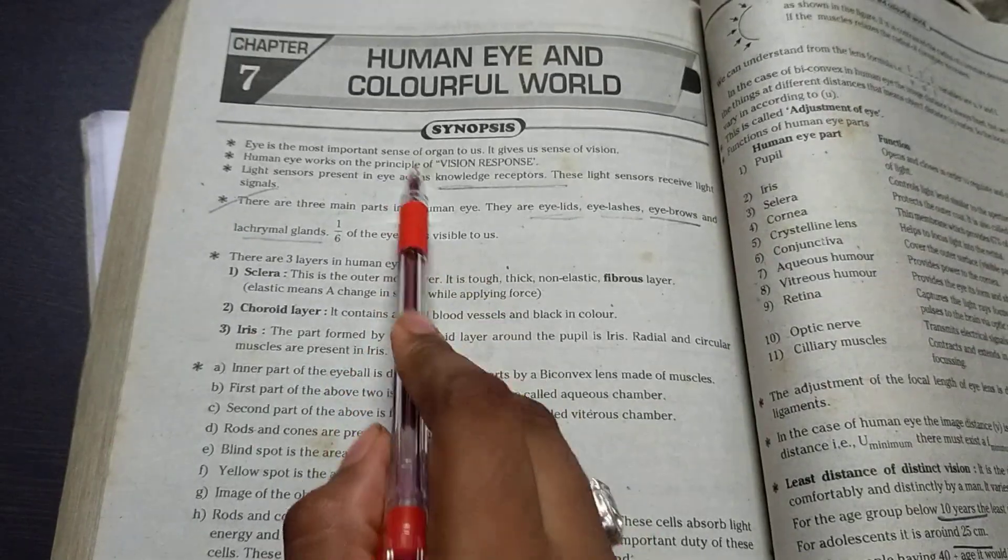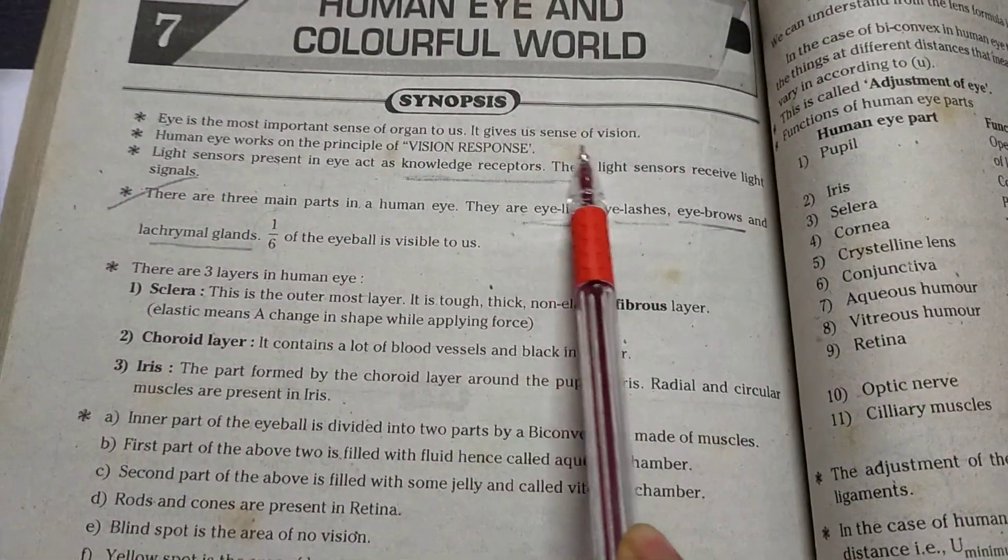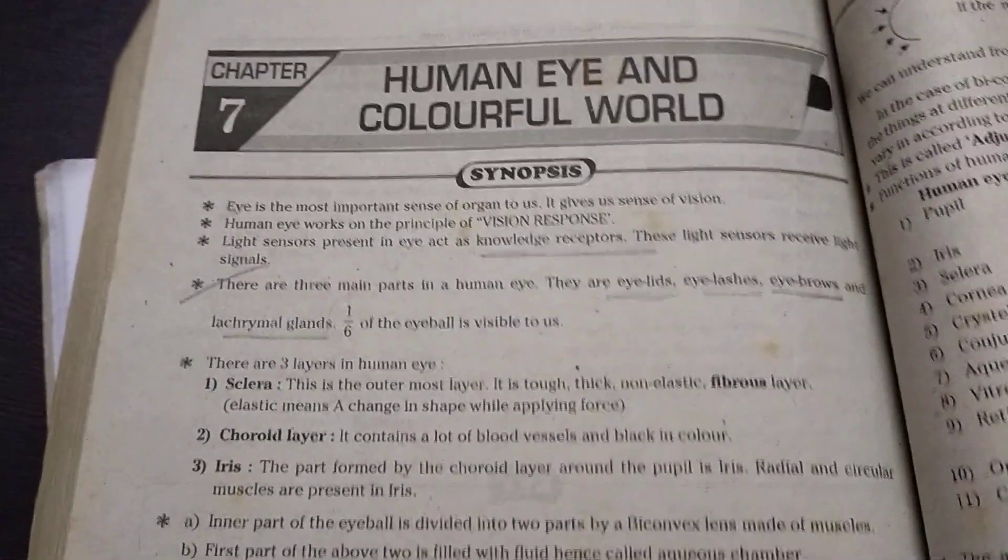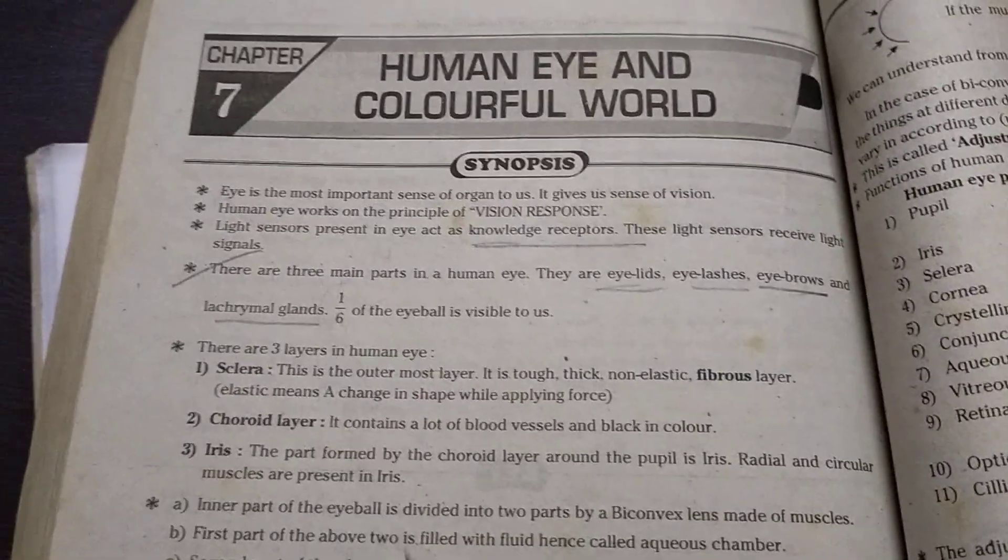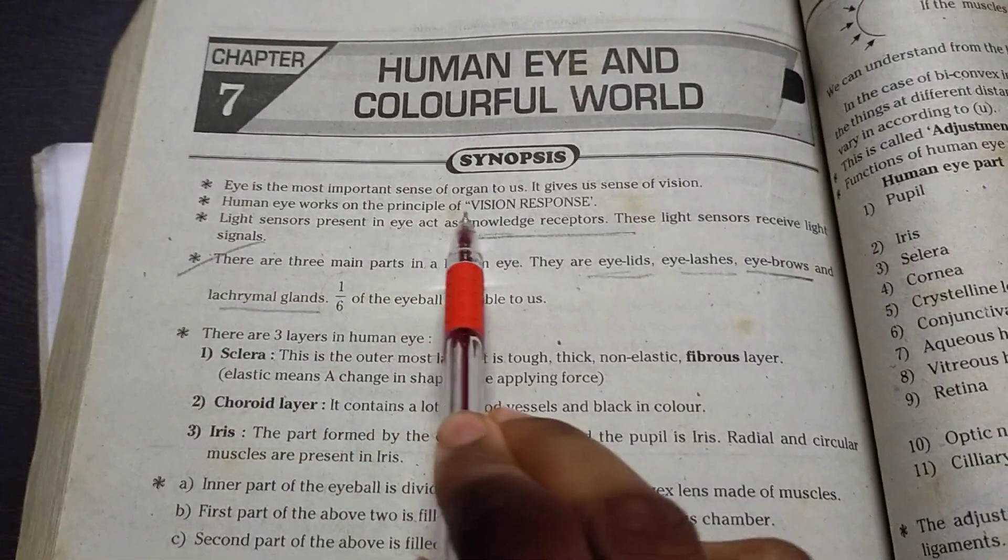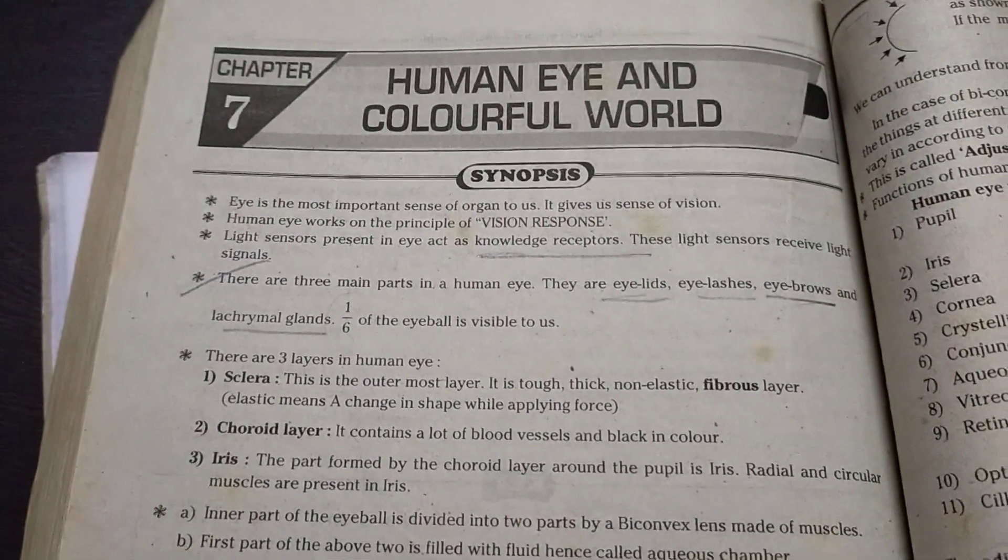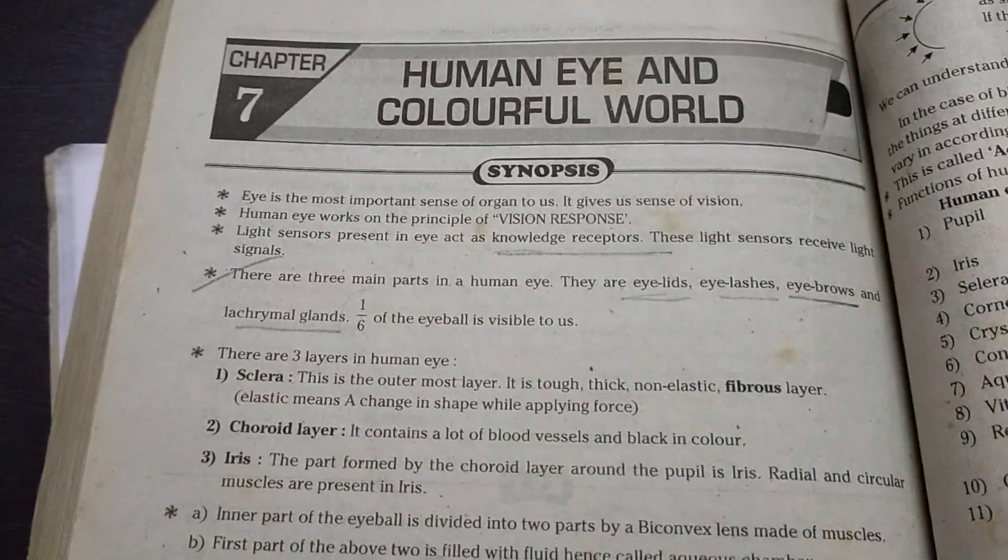Eye is the most important sense organ to us. It gives us sense of vision. Eye is very important sense organ. Okay, human eye works on the principle of vision response. We have studied in previous classes about it.